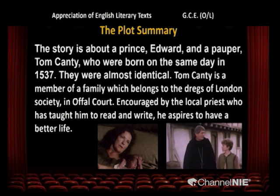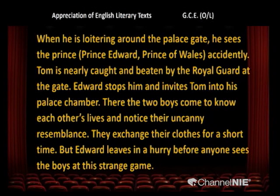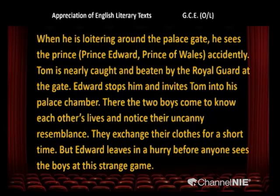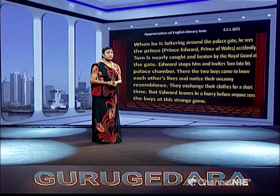Encouraged by the local priest who has taught him to read and write, Tom aspires to have a better life. When he is loitering around the palace gate, he sees the prince accidentally — Prince Edward, Prince of Wales. Tom is nearly caught and beaten by the royal guard at the gate. Edward stops him and invites Tom into his palace chamber. There the two boys come to know each other's life and notice their uncanny resemblance. They exchange their clothes for a short time, but Edward leaves in a hurry before anyone sees the boys at this strange game.